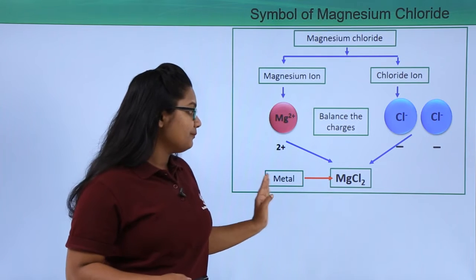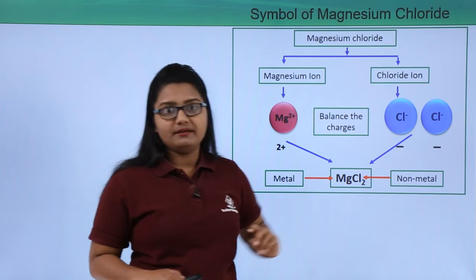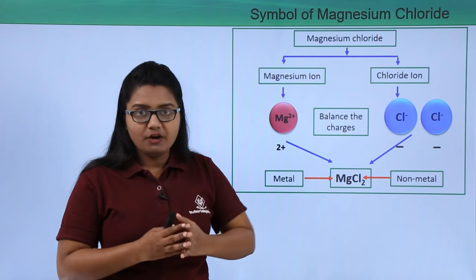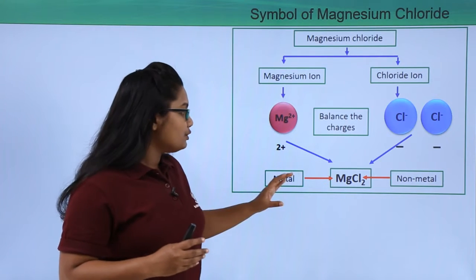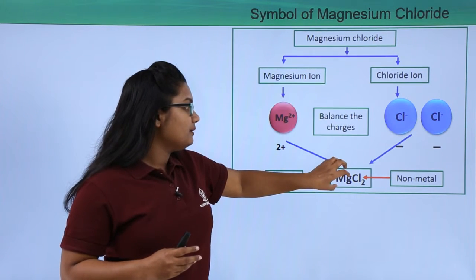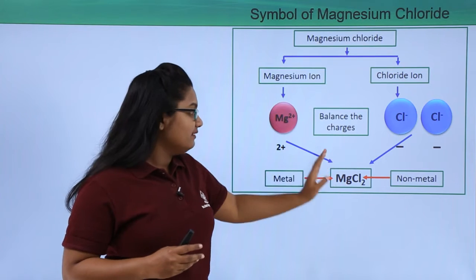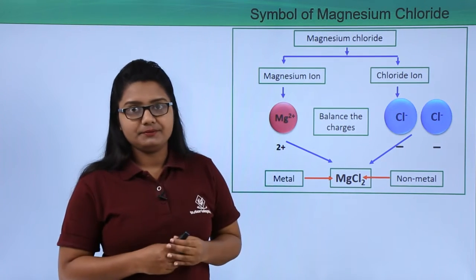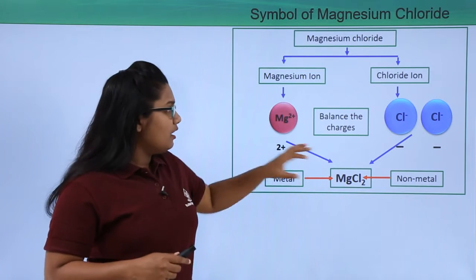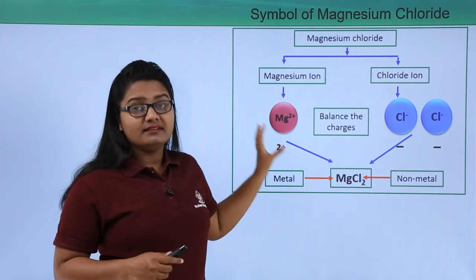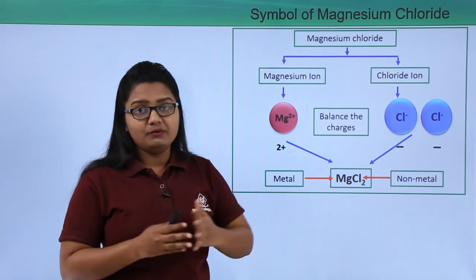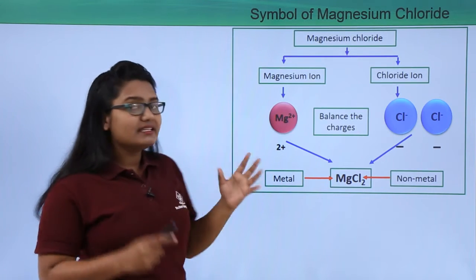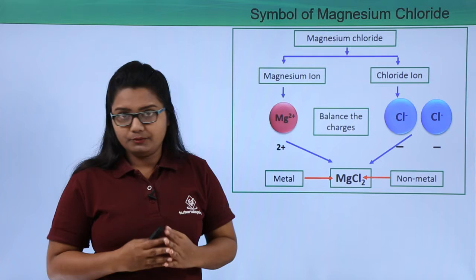Magnesium is a metal and chlorine is a non-metal. Whenever we write a formula for a compound, we write the symbol of the metal first, followed by the symbol of the non-metallic atom. This is the full process, but there is also a shorter procedure we can follow.